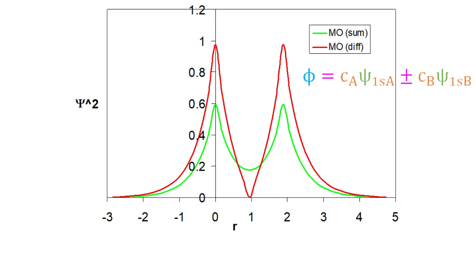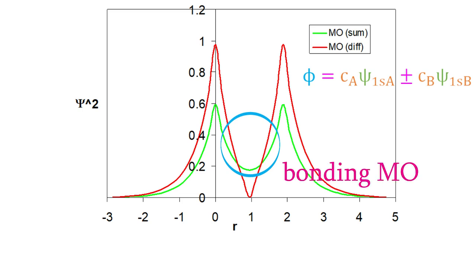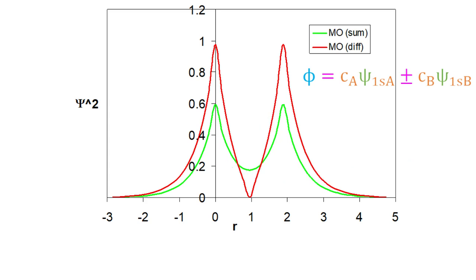Notice that since both atomic orbitals have a significant probability at the point halfway between the nuclei, when we add them to form the MO, the MO has a significant height at that position. On the other hand, when we take the difference between the atomic orbitals, the result is a probability of zero at that position. Remember, the wave function that describes an atomic orbital can be positive or negative. The MO representing the difference will have a node between the two nuclei — a place where there's no probability of having an electron. The orbital from the sum will have a significant probability of having an electron at all positions between the nuclei. That's what we mean by a covalent bond, so this MO is called a bonding molecular orbital. The MO with the node between the nuclei is called an antibonding molecular orbital.